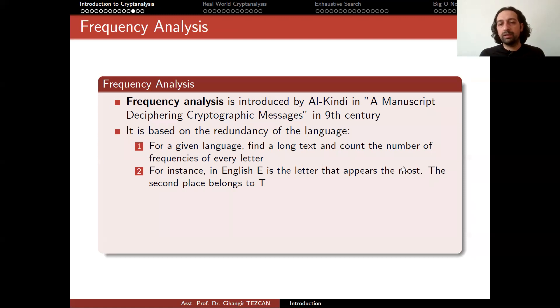So for an English text, if it is long enough, when you count it, you will see that the letter E appears the most. So this is the redundancy in the English language. And the second place always belongs to T. So if the text is not just a few words, you will observe that this is the case. But this is specific to the English language.